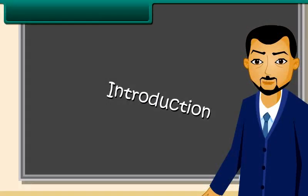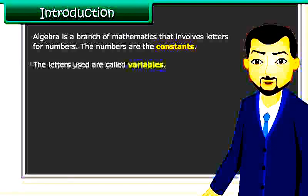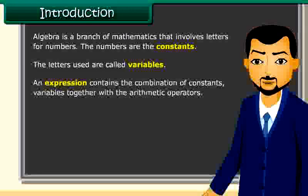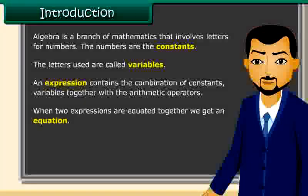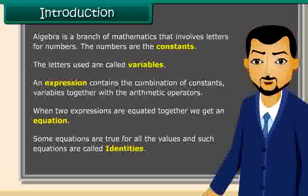Algebra is a branch of mathematics that involves letters for numbers. The numbers are the constants. The letters used are called variables. An expression contains the combination of constants and variables together with the arithmetic operators. When two expressions are equated together, we get an equation. Some equations are true for all values, and such equations are called identities.